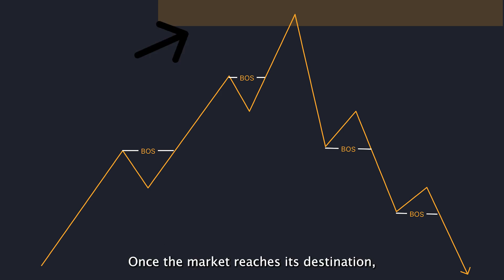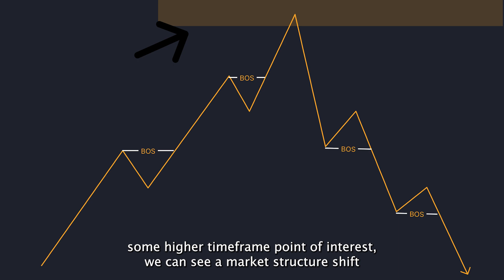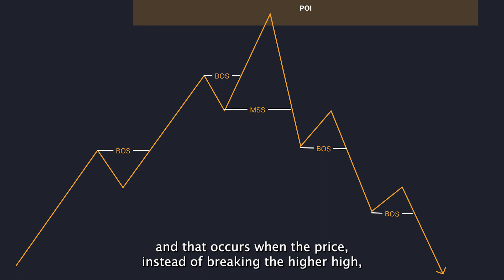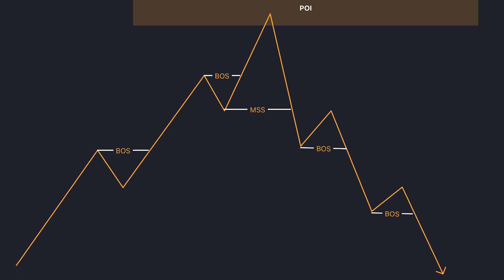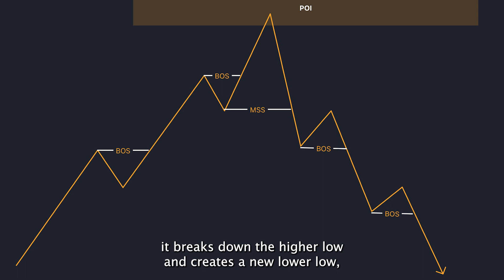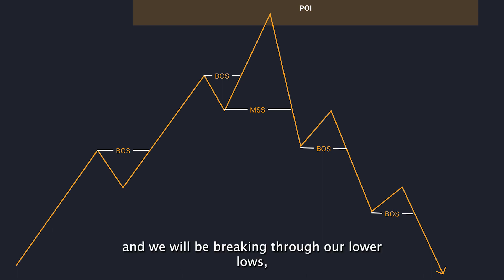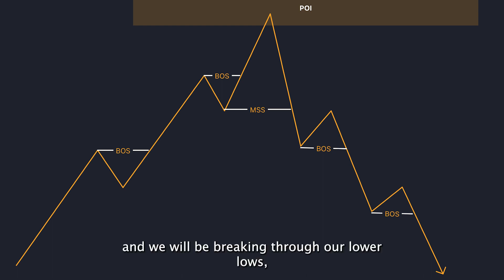Once the market reaches its destination — some higher time frame point of interest — we can see a market structure shift. That occurs when the price, instead of breaking the higher high, breaks down the higher low and creates a new lower low, creating a market structure shift. This indicates that we are going into a bearish order flow, and we will be breaking through our lower lows, creating a bearish break of structure.